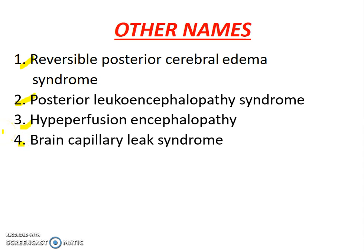Multiple names have been postulated because no one name explains it perfectly. In some conditions, instead of posterior circulation, anterior circulation might get involved. In few patients, it might not be reversible. So that's why many names have been postulated to explain it, but none is satisfactory.